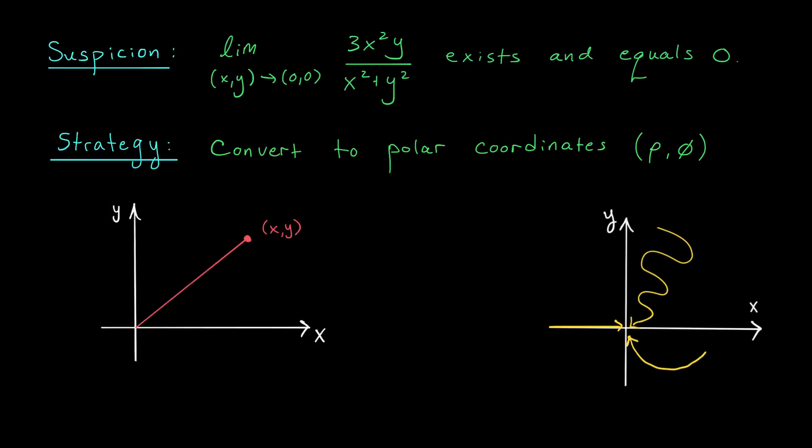Okay folks, we suspect that our limit exists and is equal to 0. But to show this, we must demonstrate that our function approaches 0 along every path leading to the origin. Here's the trick for showing this. We are going to convert our Cartesian coordinates (x,y) into polar coordinates (ρ,φ). Now don't worry, I'm going to give you a reminder of how all of this works. But more importantly, I'm going to explain why converting to polar coordinates might be a good strategy for evaluating this limit.